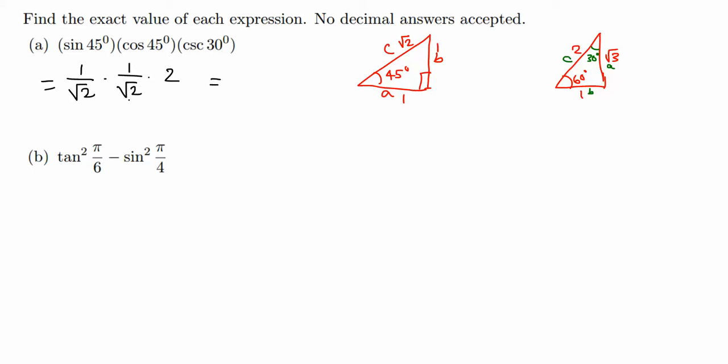And the square root of 4 is 2. So 2 times root 2 times root 2 is 2 on the bottom, and 2 over 2 just 1. Next, tan squared pi over 6. Let me rewrite this in terms of degree measure. Pi over 6 is the same as pi is same as 180 degrees over 6.